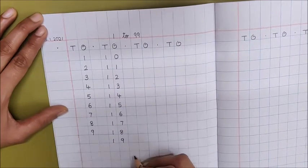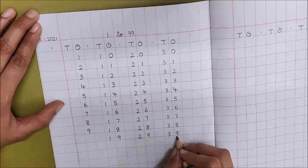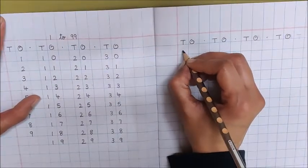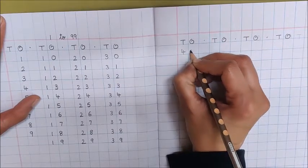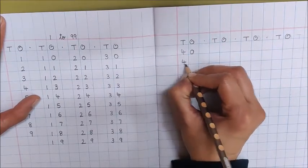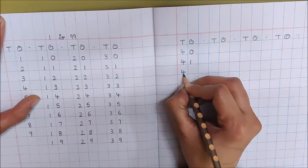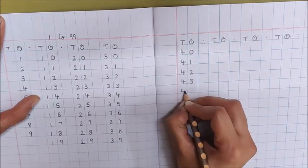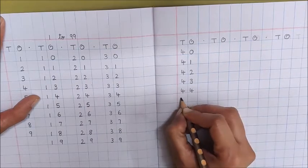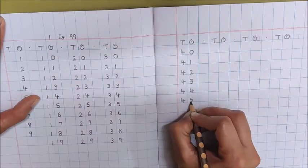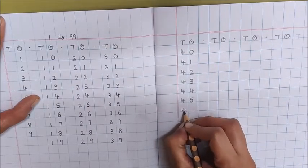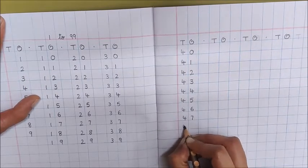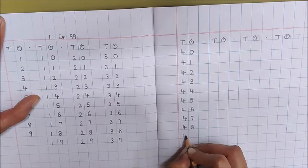Continue writing like this. Say and write. 39. Now go to the next page and continue writing. 40, 41, 42, 43, 44, 45, 46, 47, 48, 49.